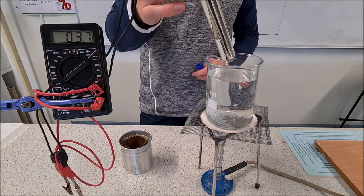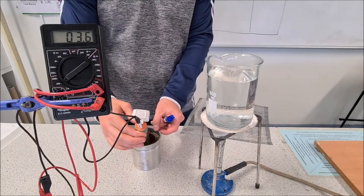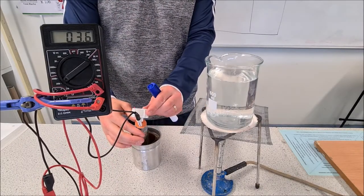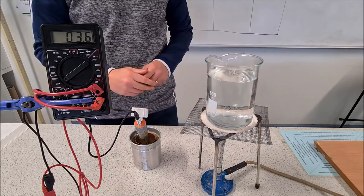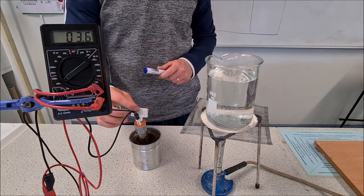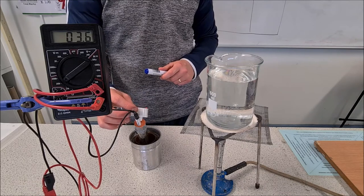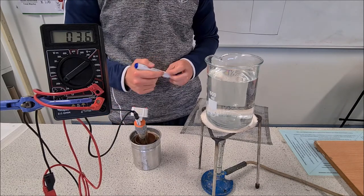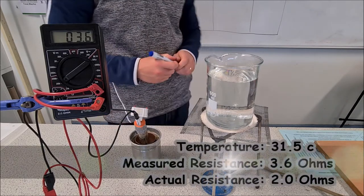What we do is we're going to take this out and leave it out of the water for a few seconds so that it's not heating up anymore and just let the temperature stabilize. So it's actually continuing to rise here now. It's at 31.5. So what's the resistance there now? 3.6.